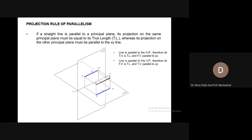Projection rules of parallelism: if a straight line is parallel to a principal plane, its projection on that same principal plane must show the true length, whereas its projection on the other principal plane must be parallel to the XY reference line.